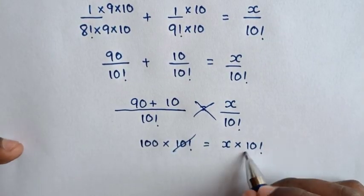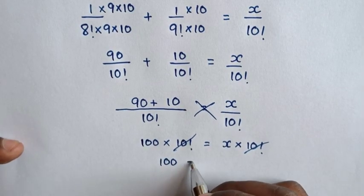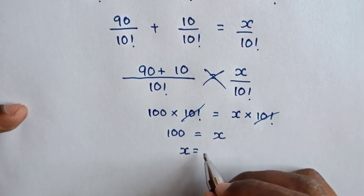Then to simplify, 10 factorial will cancel with 10 factorial. So it will be 100 is equal to x. Therefore the value of x is 100.